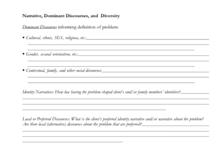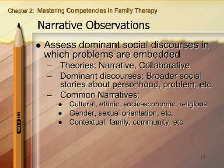This next section on narrative and dominant discourses also gets into diversity issues. In this section, you're going to start by assessing dominant discourses in which the problem is embedded — those broad social discourses and ways of thinking about what it means to be human, what is normal, and what it means to have a problem. These very much inform our sense of having a problem and who we are because of that problem. We're all embedded in multiple social discourses about who we are and what our problems mean.